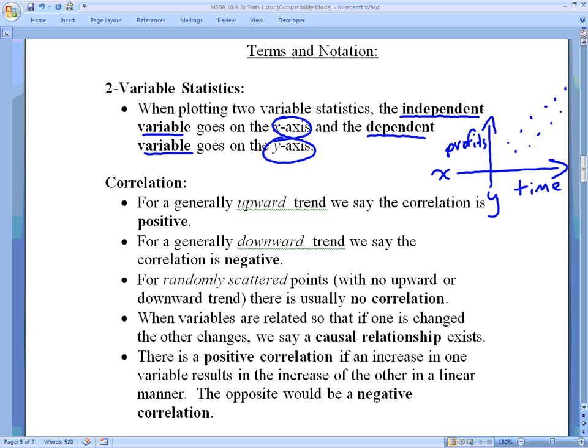Randomly scattered points with no upward or downward trend, we say there is no correlation. This graph that I have, which is an upward trend at the moment, just by adding a few more points, suddenly there's no trend at all. Because I could just as easily say it's going down as I could say it's going up. So there is no correlation.